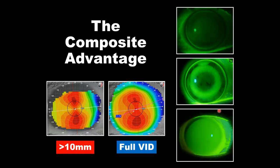Let's begin by talking about the composite map capture. Many of you are familiar that the MedMOT topographer, as a small cone topographer, gives us a fairly large area of capture. But in some eyes, especially when we have small fissures or long eyelashes, we can lose some of the data from the periphery. The composite capture was made to provide an understanding of as much of the cornea as possible.